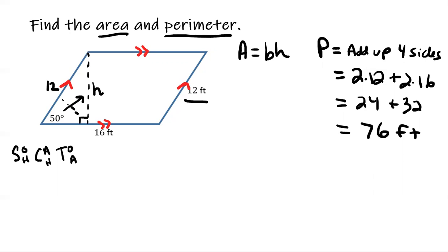I know this is my hypotenuse because it's across from the 90, right. So that 12 is my hypotenuse. So I have an opposite and I have a hypotenuse. Well, it's sine. I'm gonna say, all right, sine of 50.